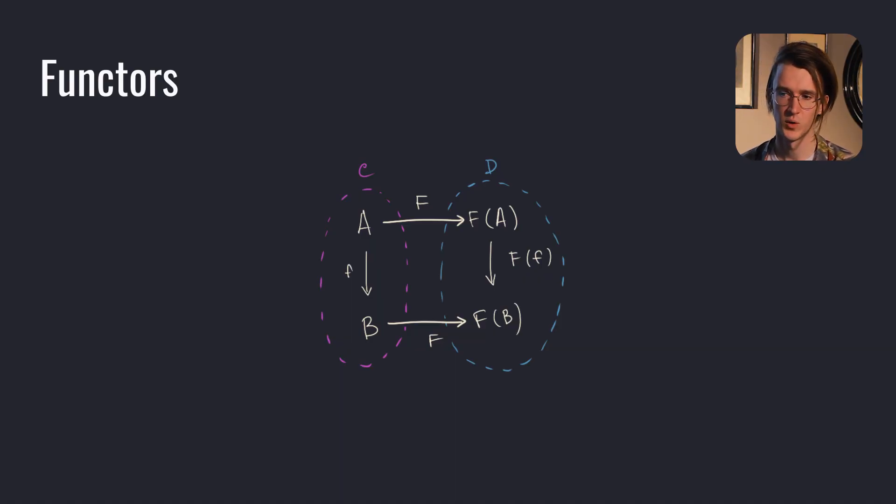For example, a functor maps objects A, B in C to objects F of A, F of C in D and also maps each morphism F to a morphism F of F. As you can see, this diagram commutes. Also, when you see this, feel free to pause and traverse the possible paths with your finger. A functor preserves identity morphisms and the composition of morphisms.